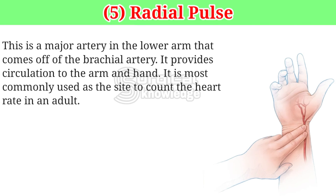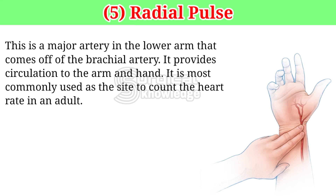Radial pulse. This is a major artery in the lower arm that comes off of the brachial artery. It provides circulation to the arm and hand. It is most commonly used as the site to count the heart rate in an adult.